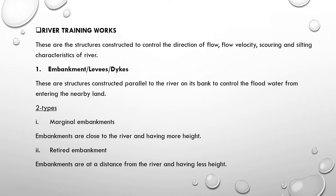River Training Works control the river flow direction, velocity, scouring, and silting characteristics. Let's start with embankments or levees or dikes. These are structures constructed parallel to the river on its bank to control flood water from entering the nearby land.